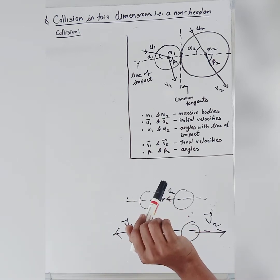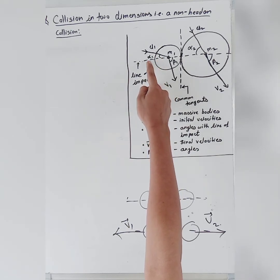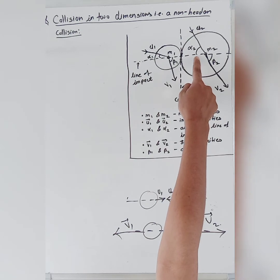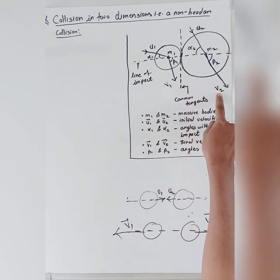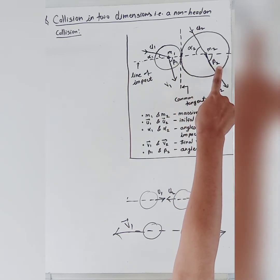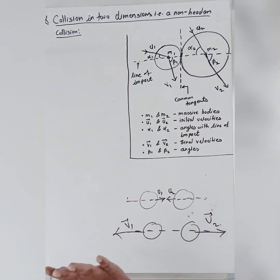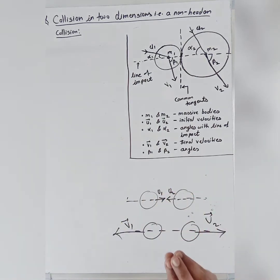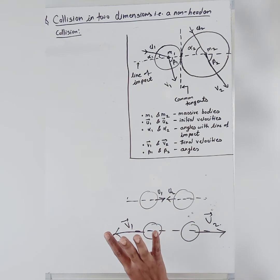Both initial velocity vectors U1 and U2 are making certain angles with the line of impact. The angle made by the initial velocity vector of the first body with the line of impact is alpha 1, and for the second body it is alpha 2. The final velocity vectors V1 and V2 make angles beta 1 and beta 2 with the line of impact respectively. In case of non-head-on collision, the velocity vectors are not along the line of impact; they make certain angles with it.